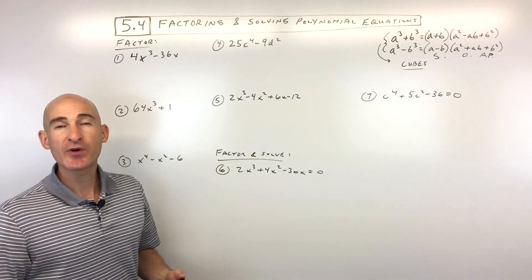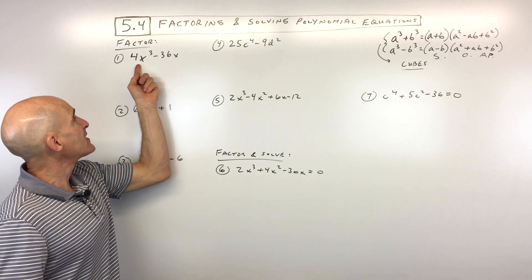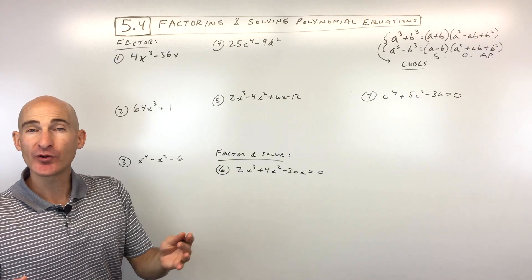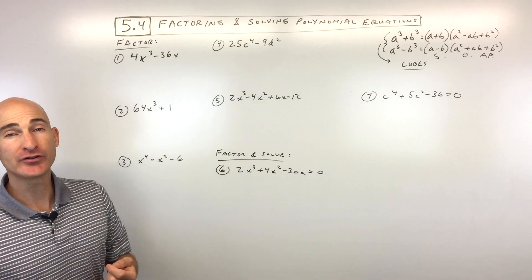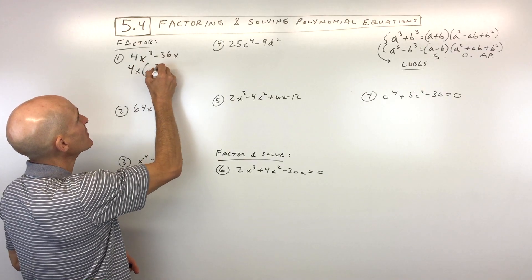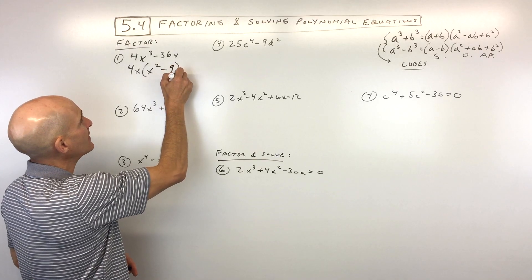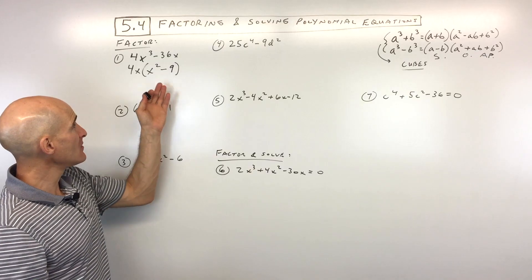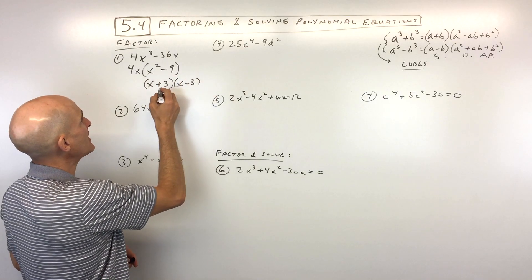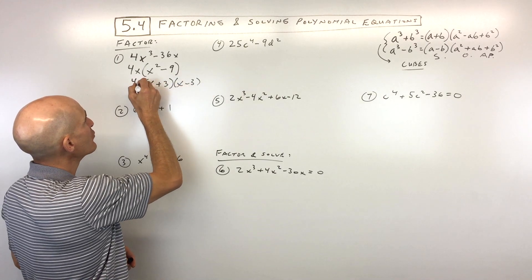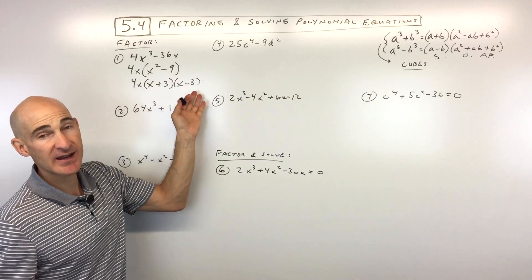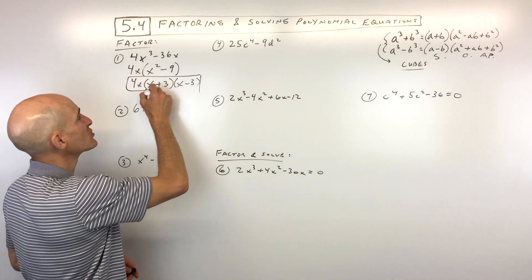Practice problem 1: factor 4x cubed minus 36x. The first step is always the greatest common factor — here we can factor out 4x, leaving x squared minus 9. Now look to factor further: x squared minus 9 is a difference of two squares, which factors to x plus 3 times x minus 3. Bring down the 4x for the fully factored form: 4x times x plus 3 times x minus 3. If this were equal to zero, set each factor to zero and solve.